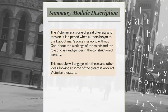The Victorian era is one of great diversity and tension. It is a period when authors began to think about man's place in the world without God, about the workings of the mind and the role of class and gender in the construction of identity. This module will engage with these and other ideas, looking at some of the greatest works in Victorian literature.